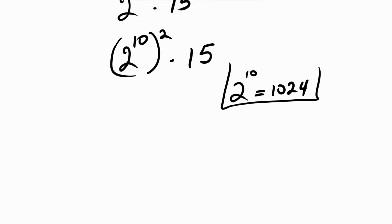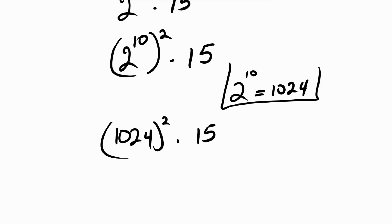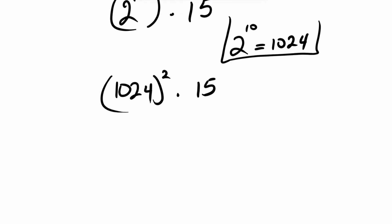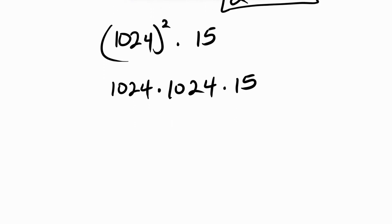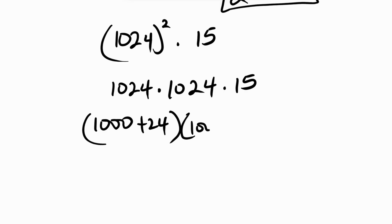Plugging that back in, this becomes 1024 squared times 15. Now 1024 squared is 1024 times 1024, then times 15. To handle these large numbers without a calculator, let's rewrite 1024 as 1000 plus 24.